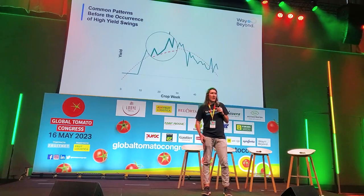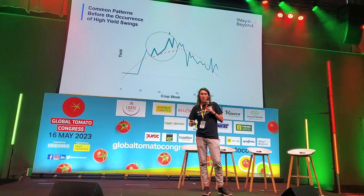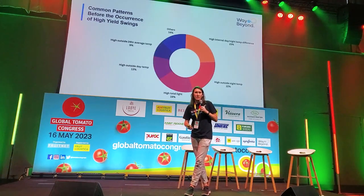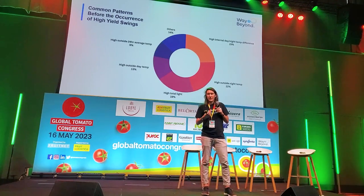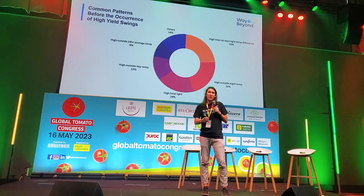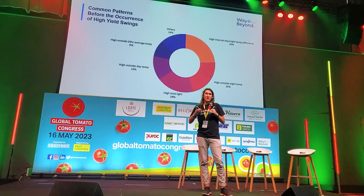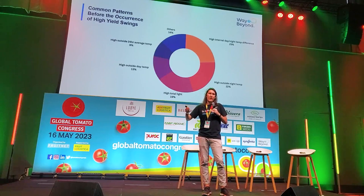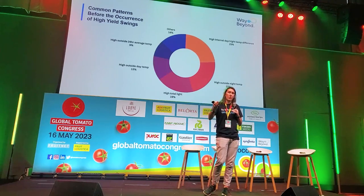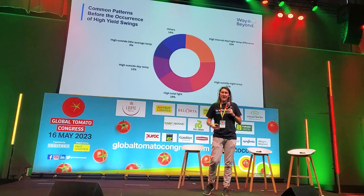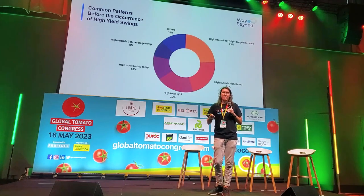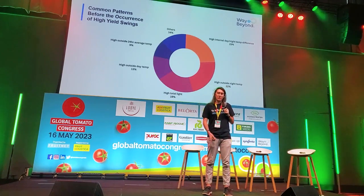We did the same for high swing weeks. What we found was that in the eight weeks prior, the most common factor was high internal day-to-night temperature difference. Similar to the low swing weeks, if the difference between your day temperature and night temperature is really large, there's a risk of having a high swing week where you produce more than expected. High outside night temperature and high total light were also factors — more light means more energy and abundant production.